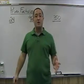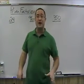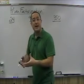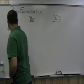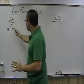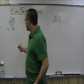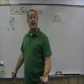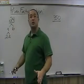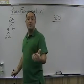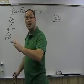Let's do the prime factorization of 24. We think of two numbers that multiply to make 24, and we cannot use 1. Let's go with 4 times 6. Now we ask: are either of these prime numbers? No, so we keep breaking them down. For 4, that's 2 times 2. Both 2s are prime, so we circle them.